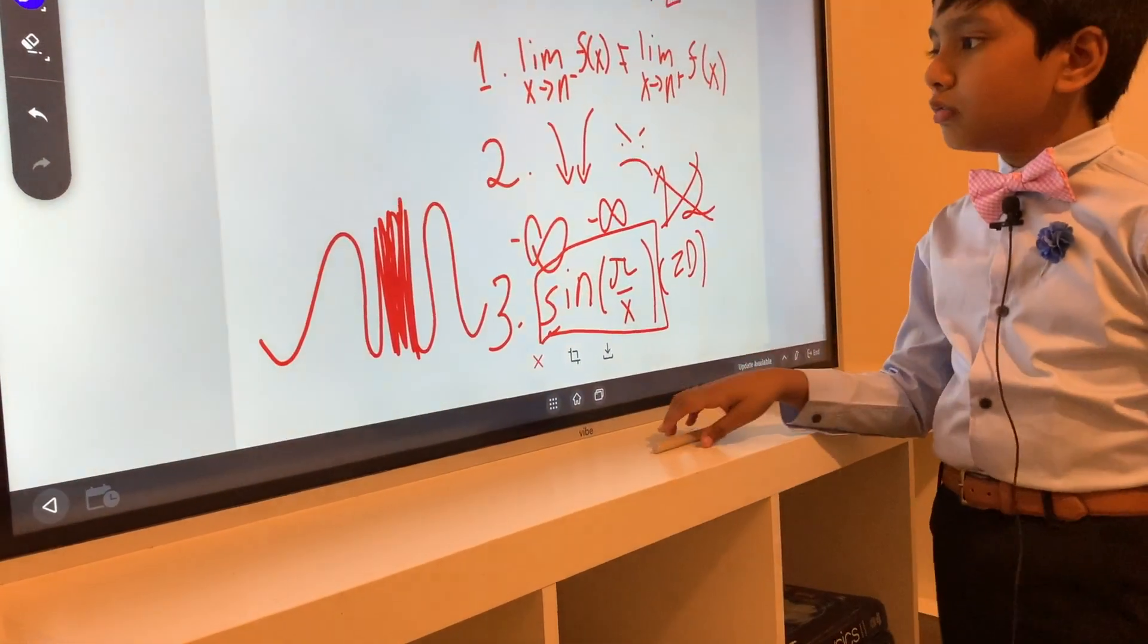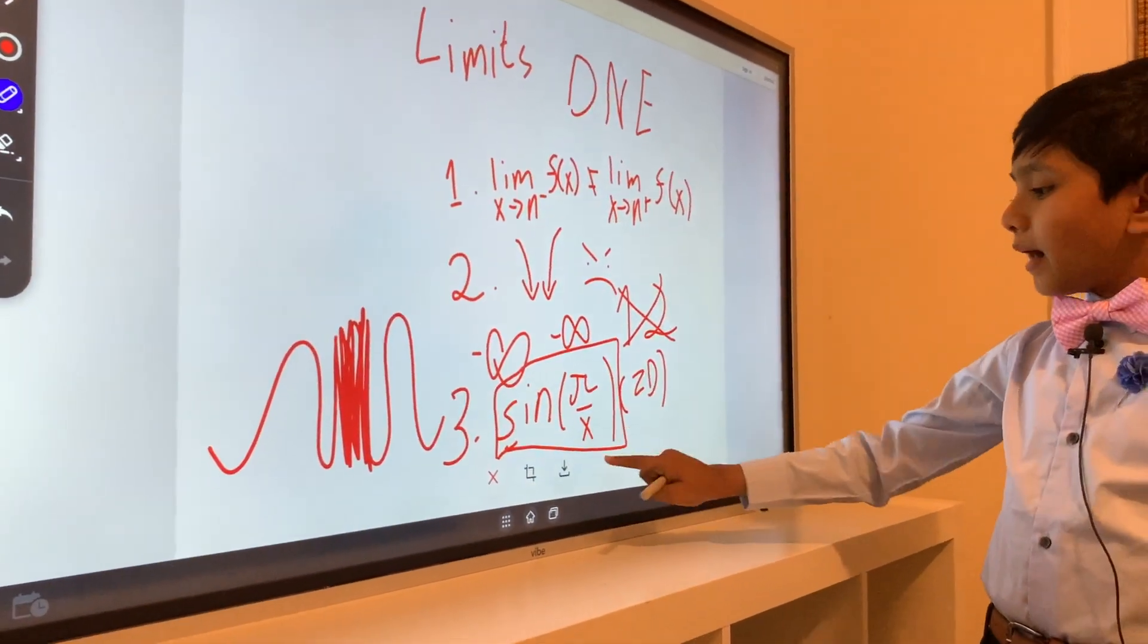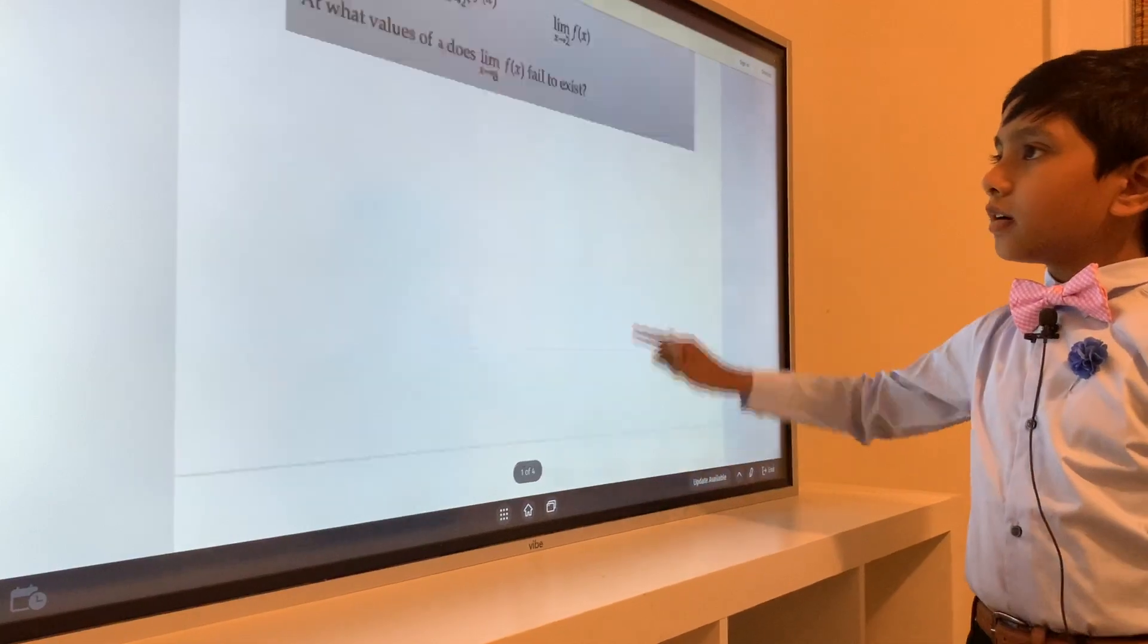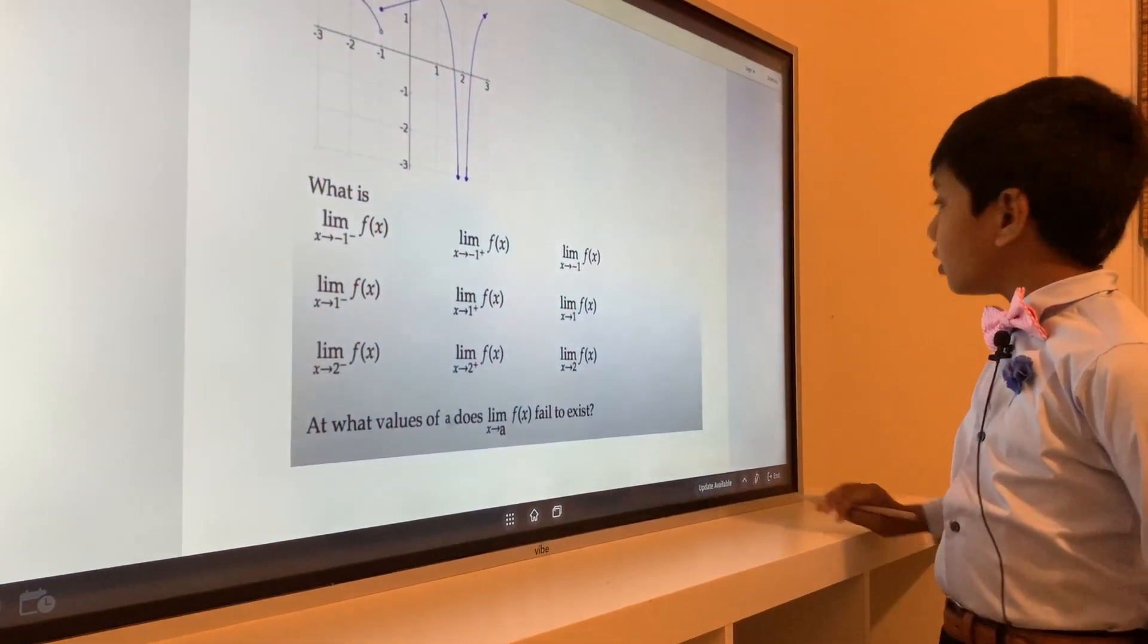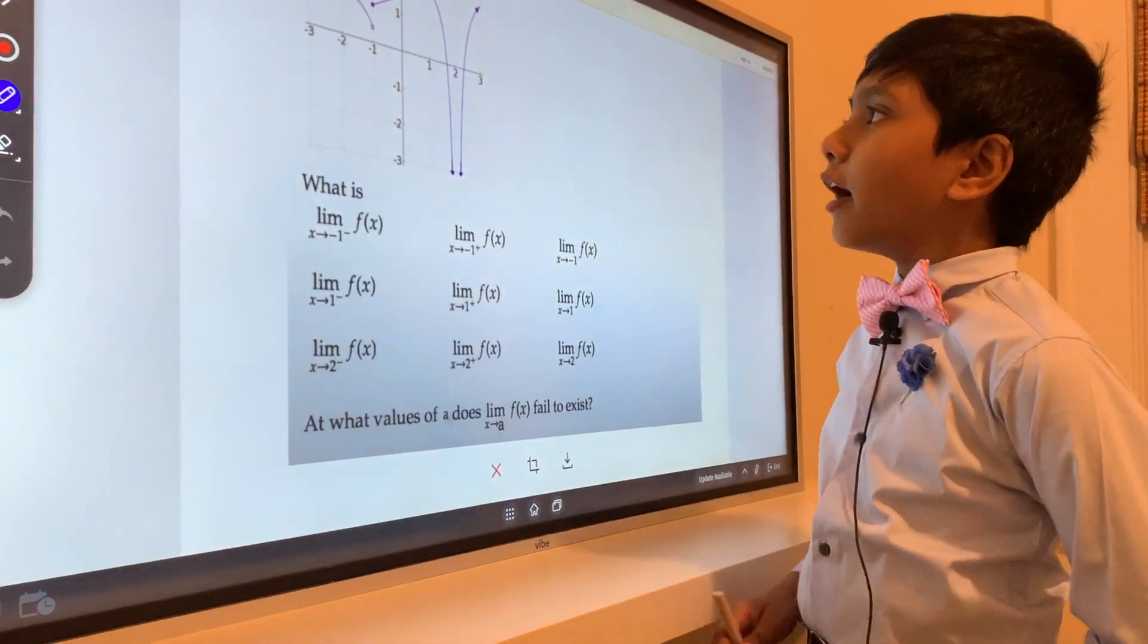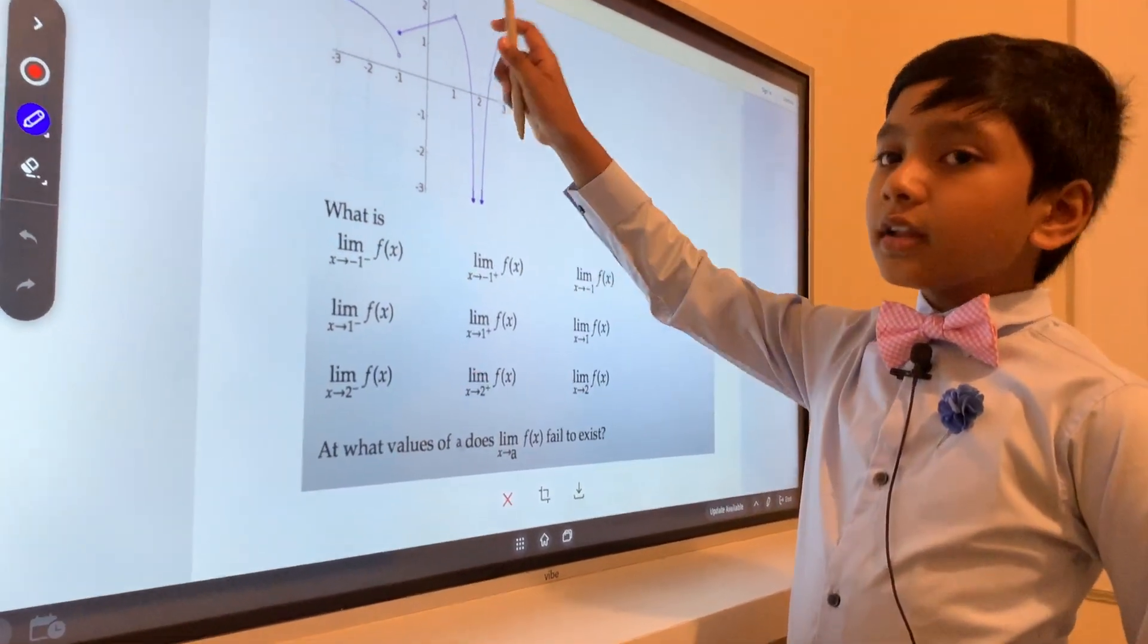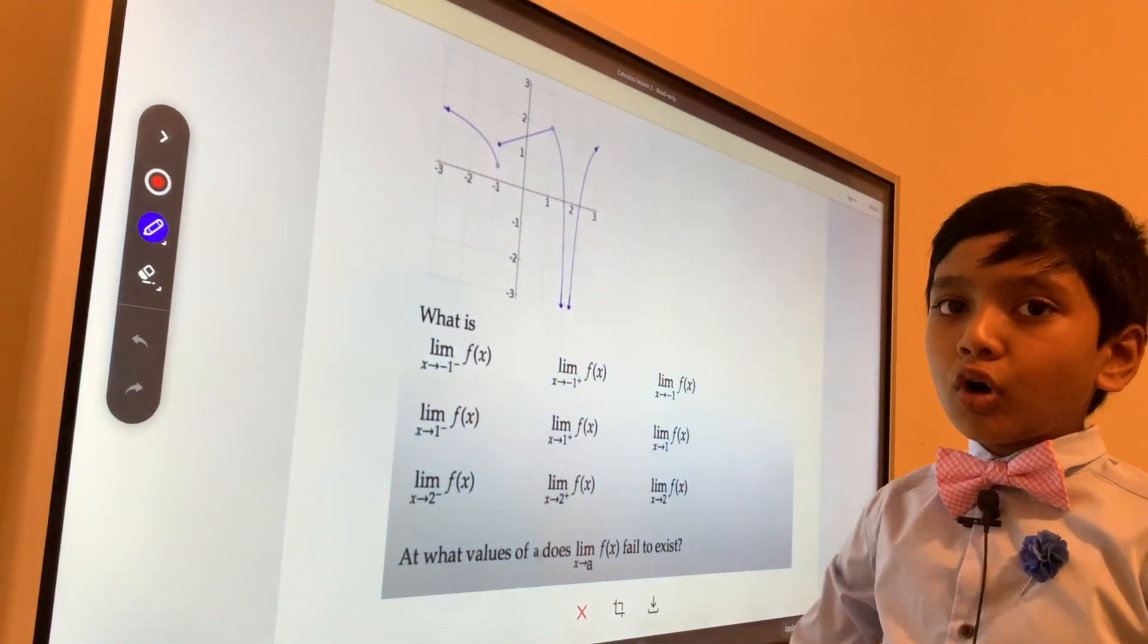So now let's go back to the top, and now doing it in this graph we can see two ways where things are undefined. Can you identify the two regions here where the limits are undefined?